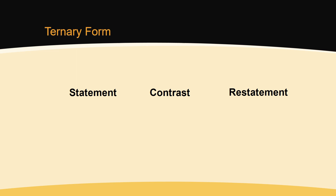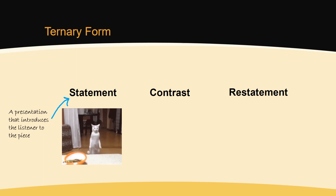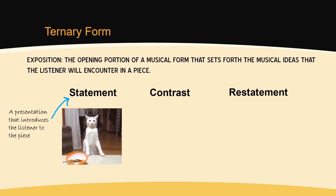This basic concept governs the way in which many musical forms are put together. In many pieces, there is a presentation of material at the beginning. This statement introduces the listener to the thematic and harmonic material of the piece. We often say that the first statement of musical material is expository in function. In writing, an exposition is a setting forth of the meaning or purpose of the written content — you tell the reader what it is you are going to write about. In music, an exposition has the same purpose: to set forth the musical ideas that the listener will encounter in a piece.